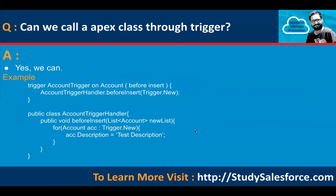Can we call an Apex class through a trigger? Yes, and it is best practice to create a separate Apex class for trigger logic. Don't write business logic in the trigger itself — instead, create separate methods in a trigger handler class and call those methods in the trigger. For example: 'trigger AccountTrigger on Account (before insert)' then call the beforeInsert method defined in AccountTriggerHandler, passing trigger.new as a parameter, which is received as a list variable in the class.